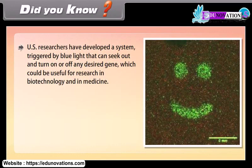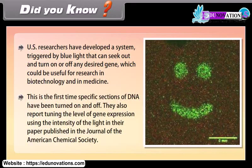Did you know? U.S. researchers have developed a system triggered by blue light that can seek out and turn on or off any desired gene, which could be useful for research in biotechnology and medicine. This is the first time specific sections of DNA have been turned on and off. They also report tuning the level of gene expression using the intensity of the light, published in the Journal of the American Chemical Society.